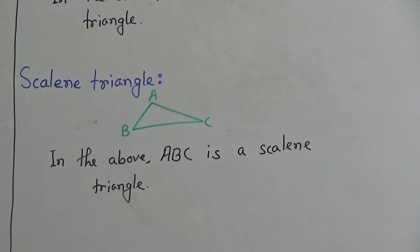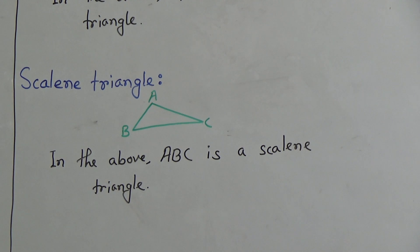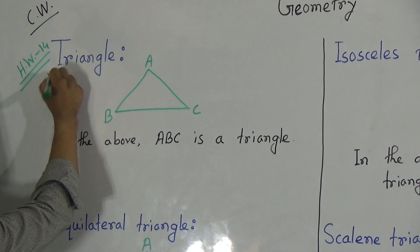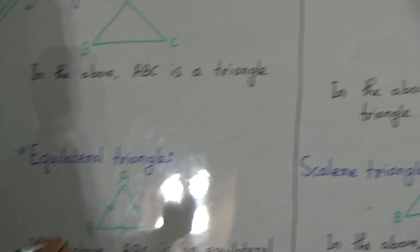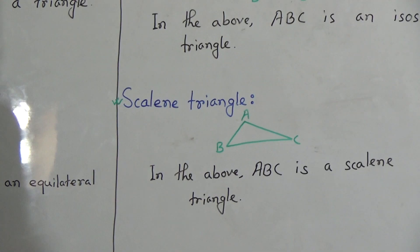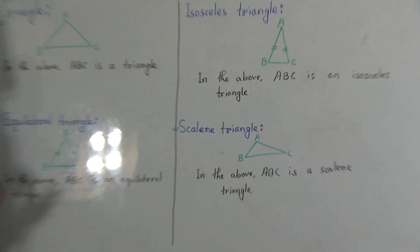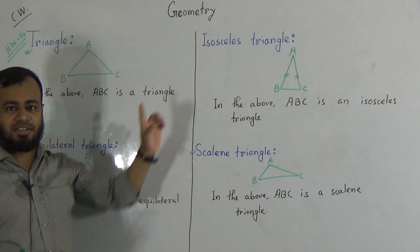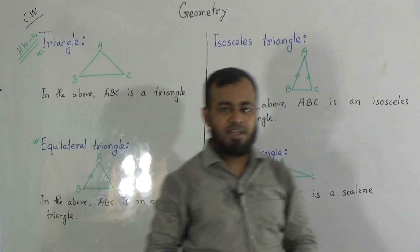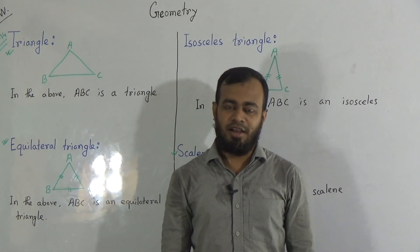My dear students, I think you have understood today's lecture. You have homework — homework number 14. You must mention the HW number in the left top corner of your copy. Write down HW 14 there. Your homework includes: triangle, equilateral triangle, and scalene triangle — please do these three as homework. See you again, Inshallah, with a new topic in a new class. Till then, Allah Hafiz.